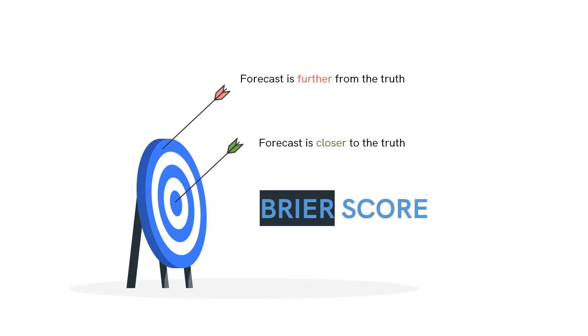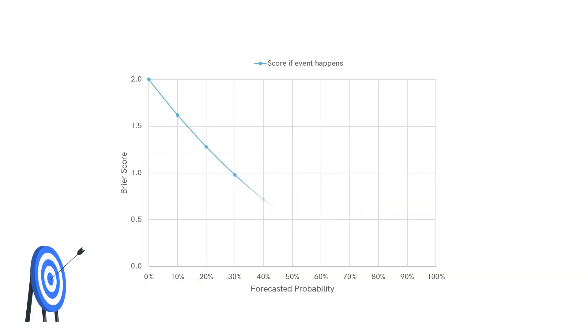Professional forecasters use an accuracy metric called the Brier score to measure the error or the degree of wrongness of a probability forecast. This chart shows you what the forecast error curve looks like, depending on the probability you assigned to an event that eventually did happen. If you gave it 100% chances of happening, then your error is zero. However, if you gave it 0% chances of happening, then your error is two. That's the maximum Brier score error.